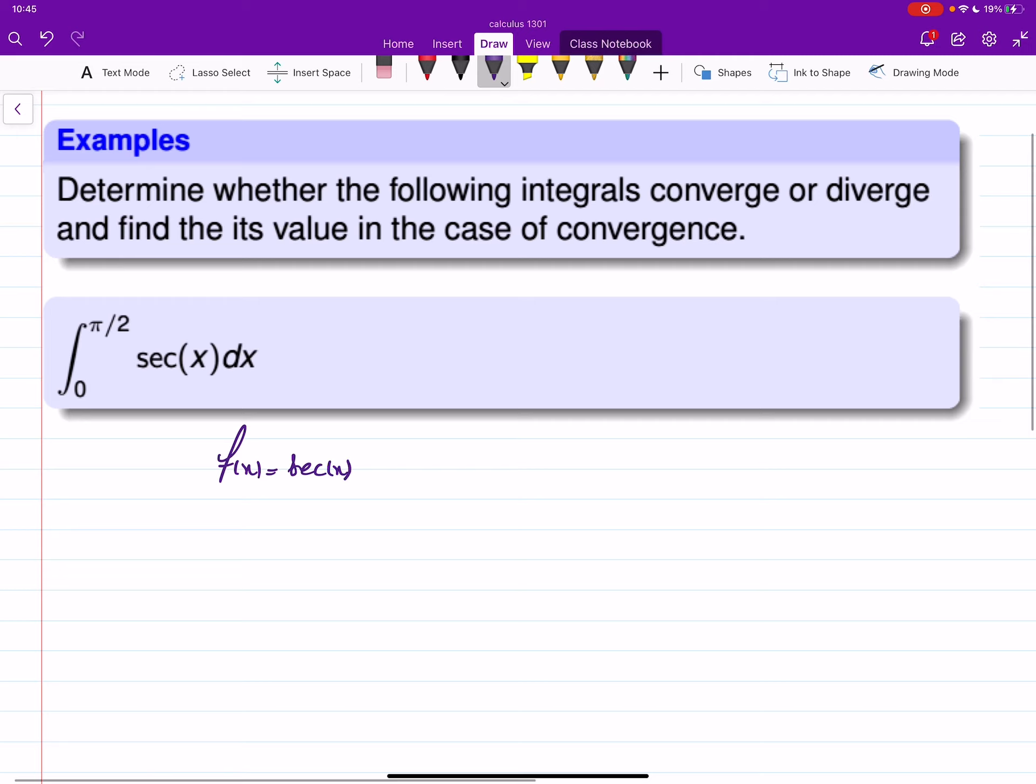When you look at the interval, it is continuous on all the points, actually including zero up to π/2. Remember secant is 1/cosine, and cosine at π/2 is zero, so π/2 is not in the domain.